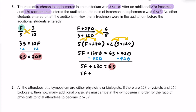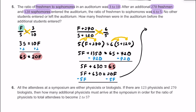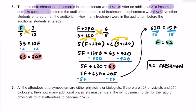Subtracting 5F from both sides gives 630 equals 15F. Dividing both sides by 15, we find that F equals 42. So before more students entered the auditorium, we know there had to be 42 freshmen.